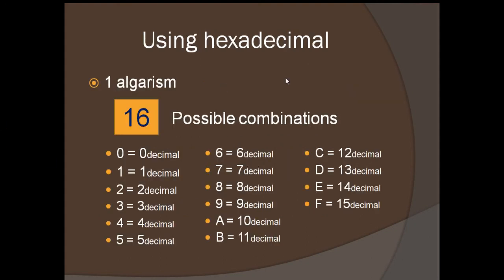Using hexadecimal notation, if you have one digit, you can have 16 possible combinations. 0 through 9 remain the same, but A represents 10, B represents 11, C is 12, D is 13, E is 14, and F is 15. From 0 to 15, those are the numbers in hexadecimal to decimal.